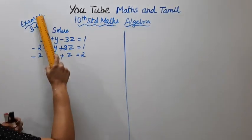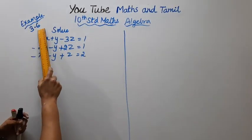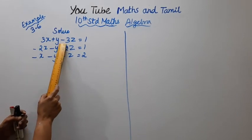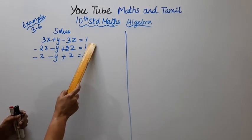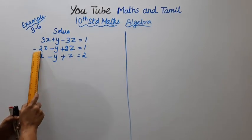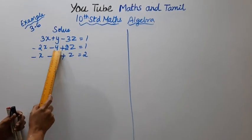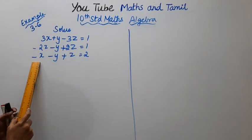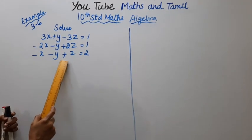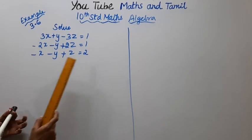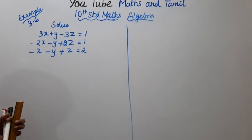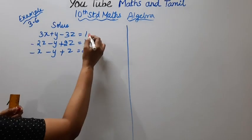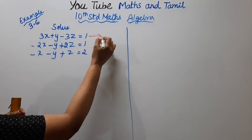Algebra Example 3.6: Solve the system of equations — 3x plus y minus 3z equal to 1, minus 2x minus y plus 2z equal to 1, minus x minus y plus z equal to 2.